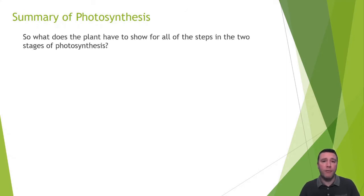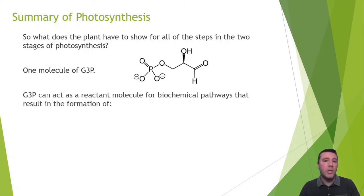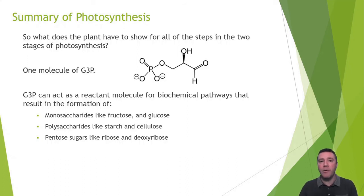So what does the plant have to show for itself after all of the processes involving photosystem II, the electron transport chain, photosystem I, carbon fixation, reduction, and regeneration of RuBP? A single molecule of G3P. A second round of the light reactions and the Calvin cycle would yield a second G3P molecule, which could be joined to the first to form monosaccharides like fructose and glucose. G3P can also contribute to the formation of starch, a storage carbohydrate for plants, and is involved in the metabolic pathways that yield pentose sugars like the ribose and deoxyribose found in RNA and DNA, respectively.